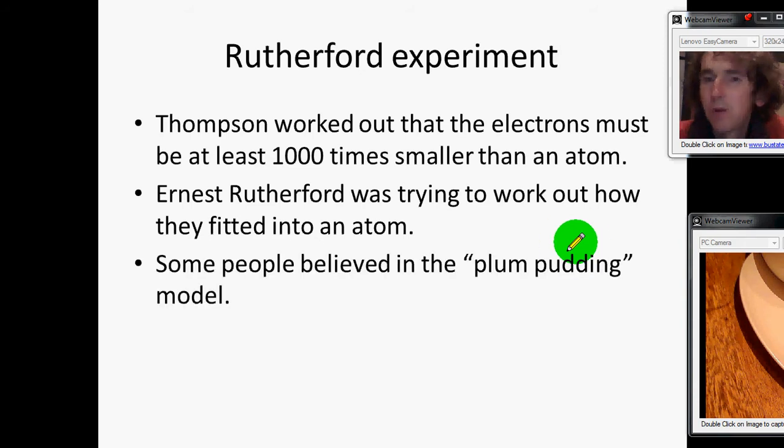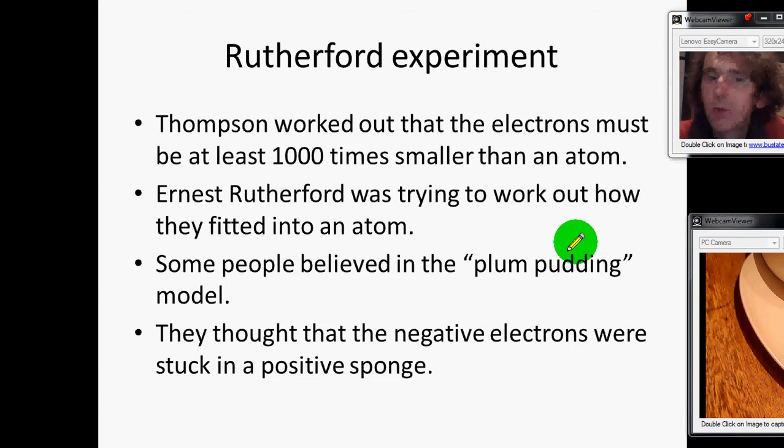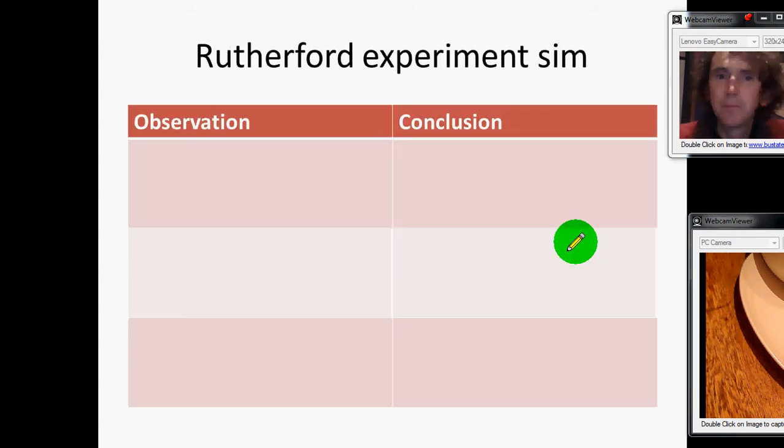Now the model that people had at the time was that maybe an atom was like a plum pudding or like a blueberry muffin or something like this. They thought that the electrons might be like the plums in the plum pudding, so little lumps that were stuck in like a positive sponge. And the positive sponge was there to balance out the negative charge of the electrons. But they weren't sure. So Rutherford did this.